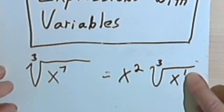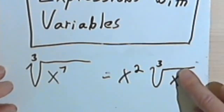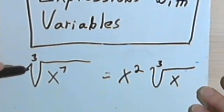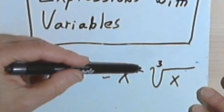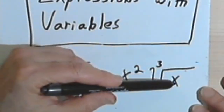Except, as you know, I don't really need to write the 1 because x is the same as x to the 1st. So the simplified version of the cube root of x to the 7th is x squared times the cube root of x.